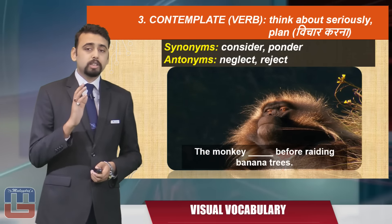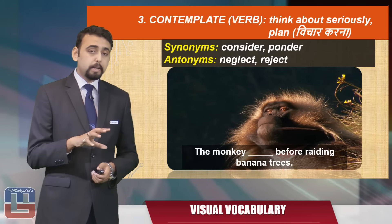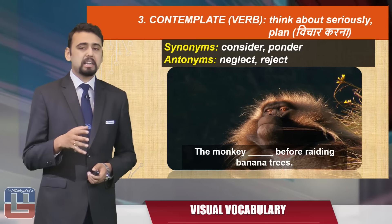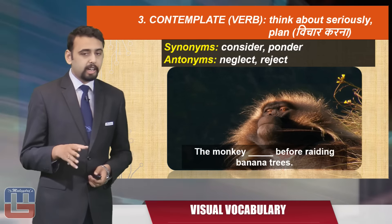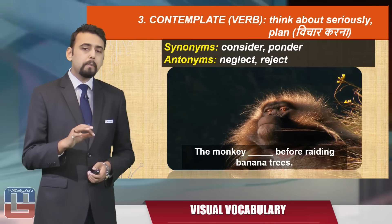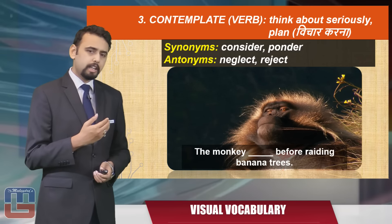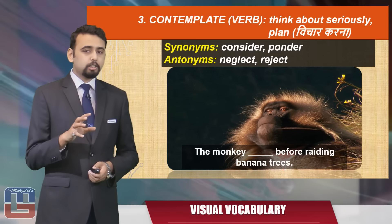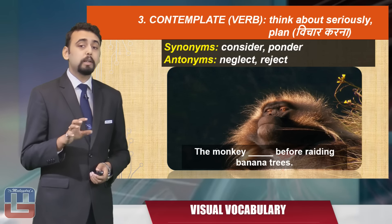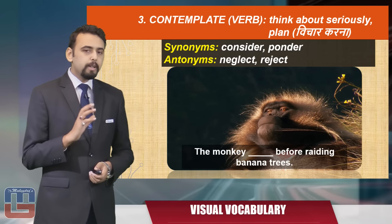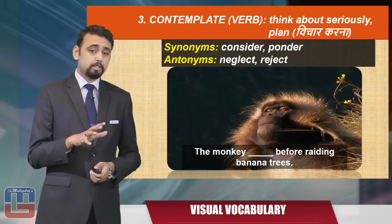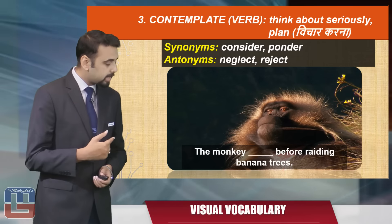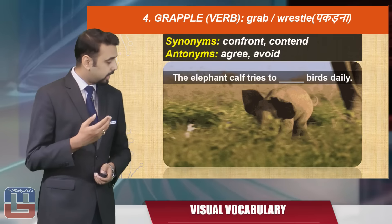The next word is 'contemplate,' a verb meaning to think about seriously or to plan. The synonyms are 'consider' or 'ponder,' and the antonyms are 'neglect' or 'reject.' Here's an image of a monkey — this monkey king was actually planning how to raid bananas. The sentence becomes: 'The monkey contemplated before raiding banana trees.'